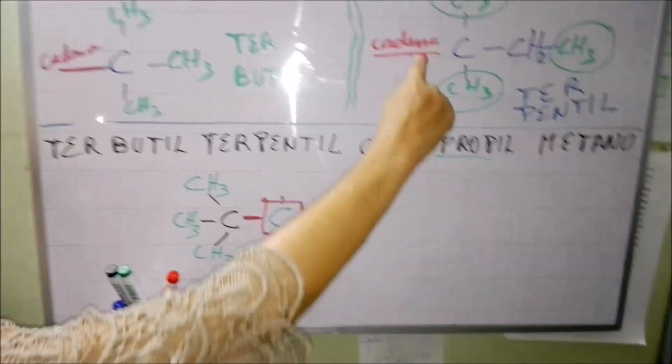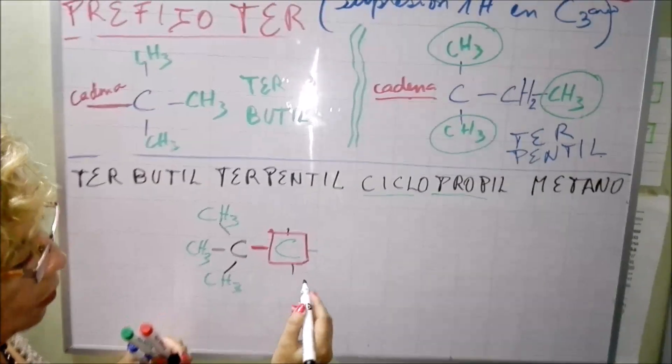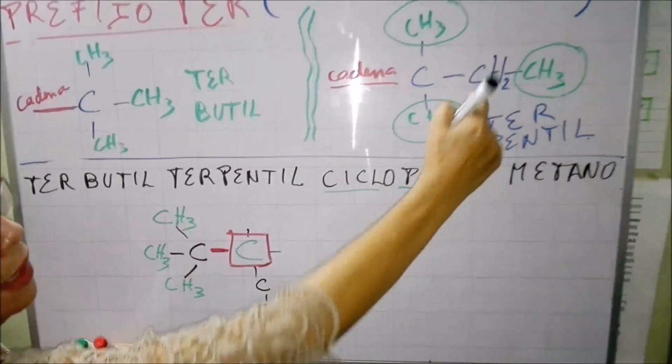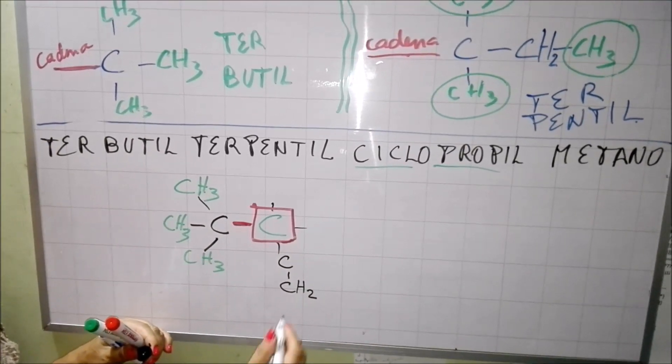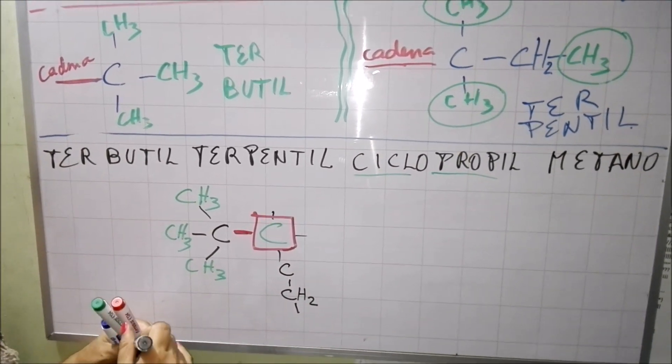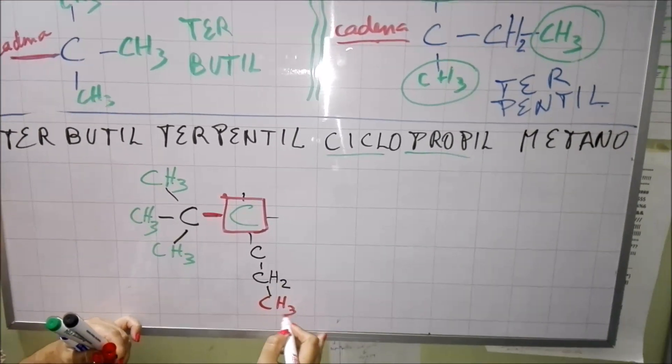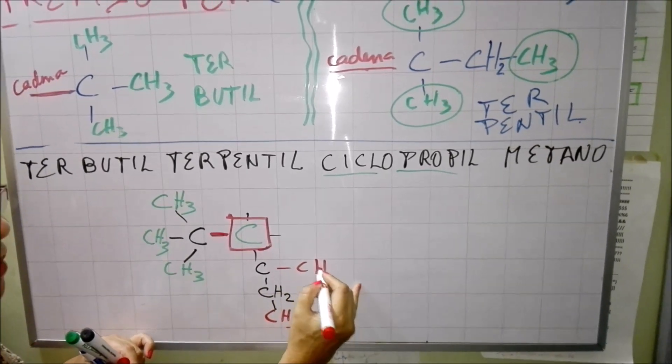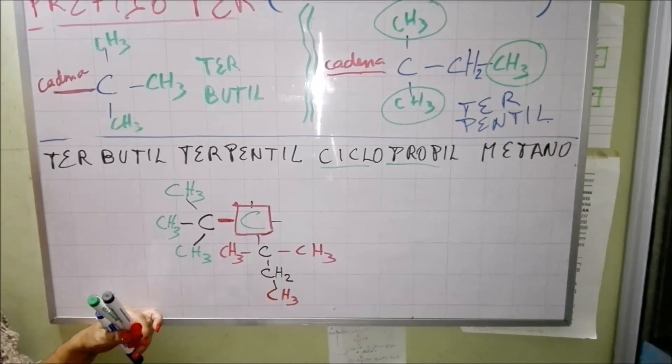Aquí el lado de acá voy a poner el terpentil. Coloco otra vez engancho en cadena el carbono, ahora mira carbono aquí y aquí pongo este CH2, CH2 que tengo aquí. A este de acá hago la primera abierta y voy a hacer CH3. Aquí pongo CH3 y aquí pongo CH3.